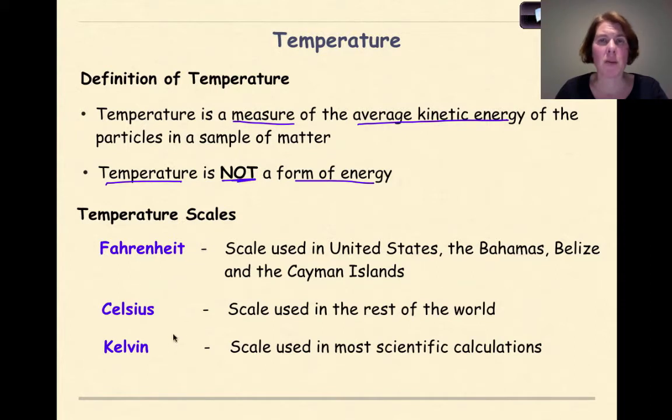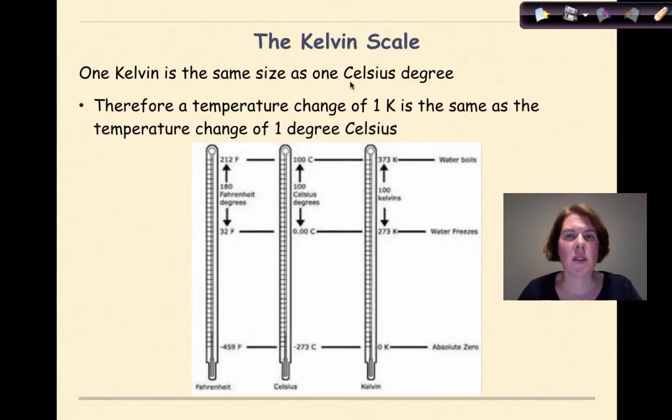Now there's three different types of temperature scales. There's the Fahrenheit scale, which is used in the United States, the Bahamas, Belize, and the Cayman Islands. And then there's the Celsius scale, which is used by the rest of the world. And then there's the Kelvin scale, which is used in most scientific calculations. We are going to be working primarily with Celsius and Kelvin. We will not be working with Fahrenheit.